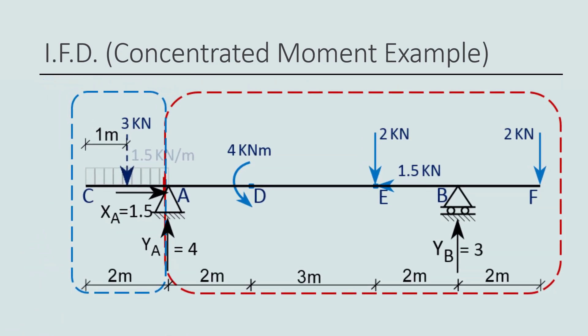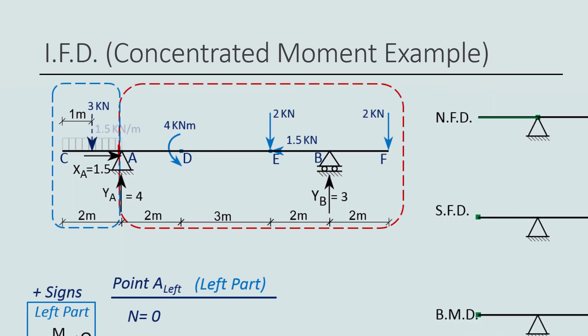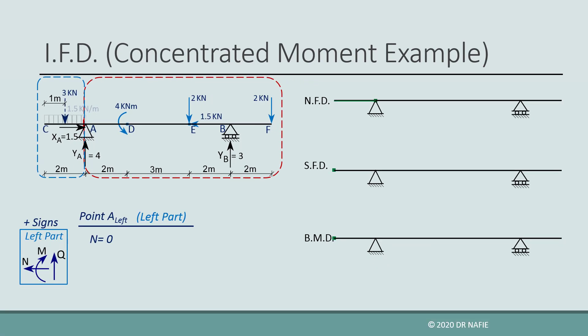Take caution: although XA appears to be in the left part, it is not. Both XA and YA belong to the right part because they act on point A, and point A belongs to the right part. The shear force is the sum of all vertical forces in the left part. The left part only contains the 3 kN equivalent force, so the shear force is negative 3 kN. We draw this value in the shear diagram and connect it to the value at point C using a straight line.